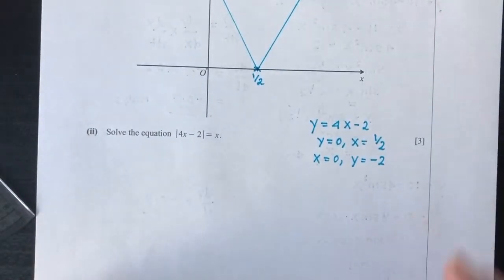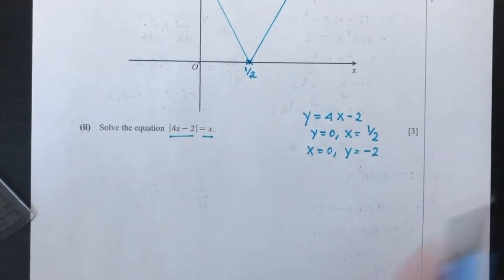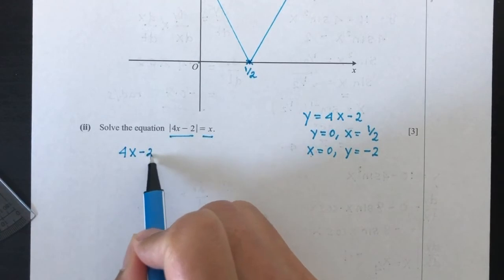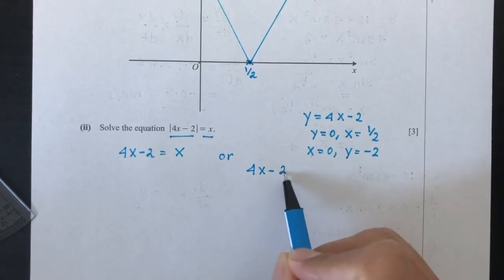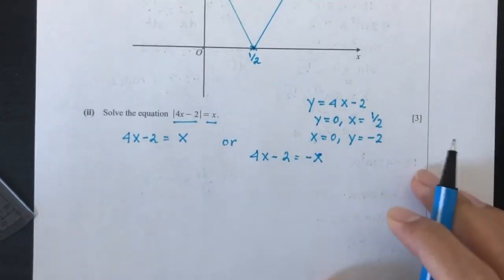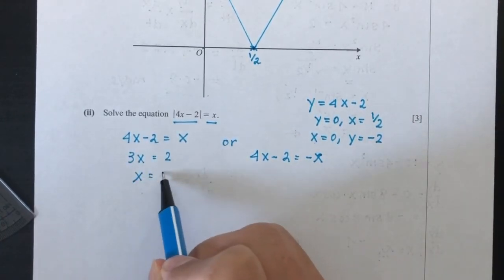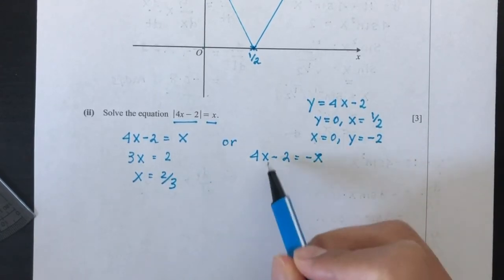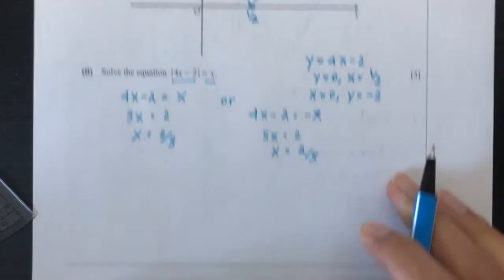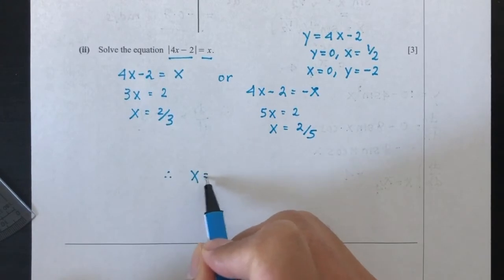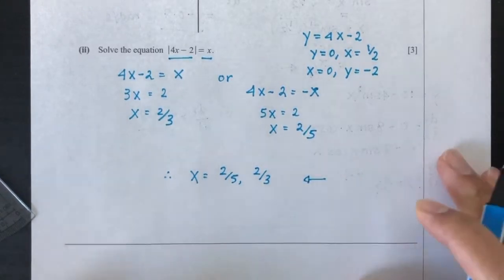Now solve the equation |4x − 2| = x. This gives either 4x − 2 = x or 4x − 2 = −x. From the first: 3x = 2, so x = 2/3. From the second: 5x = 2, so x = 2/5. There are two values of x: x = 2/5 or x = 2/3.